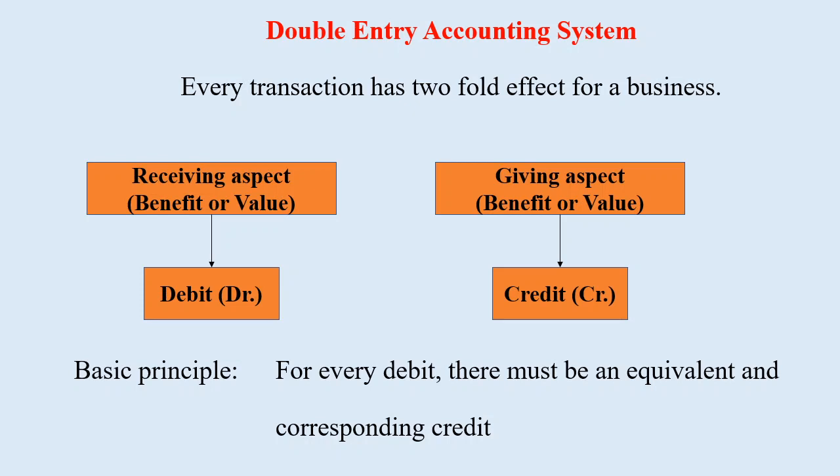The receiving aspect is denoted by debit, written in short form as Dr. The giving aspect is denoted by credit, written in short form as Cr. The basic principle of the double entry accounting system is: for every debit, there must be an equivalent and corresponding credit.